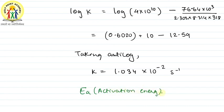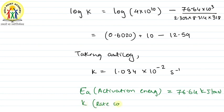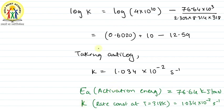So the final answers are: activation energy Ea = 76.64 kJ/mol, and the rate constant at T = 318 Kelvin is k = 1.304 × 10⁻² s⁻¹. I hope you have understood the explanation of this particular topic. Thank you.